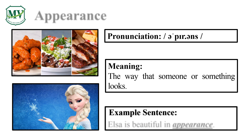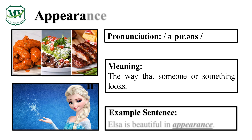Please repeat the word after me: appearance. Let's spell it: A, P, P, E, A, R, A, N, C, E. Appearance. Elsa is beautiful in appearance.